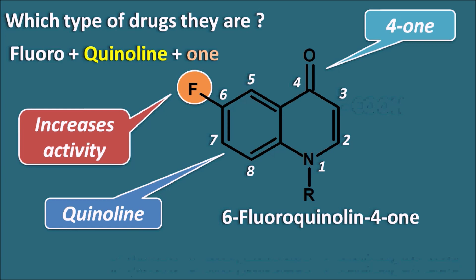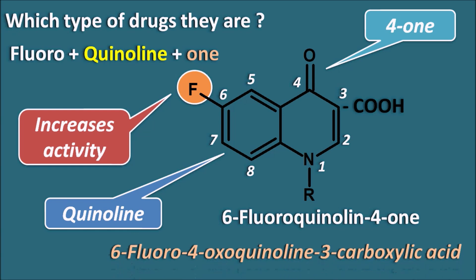Apart from these structural features, all fluoroquinolones have a carboxylic acid moiety at the third position. The common name can therefore be written as 6-fluoro-4-oxoquinoline-3-carboxylic acid. The ketone is treated as 4-oxo because we give preference to the carboxylic acid. This is the common ring present in all fluoroquinolones.